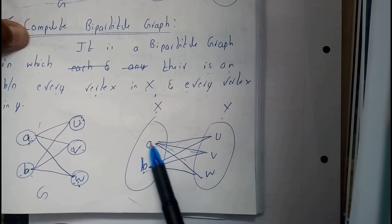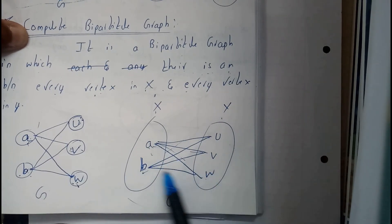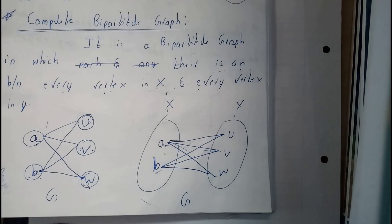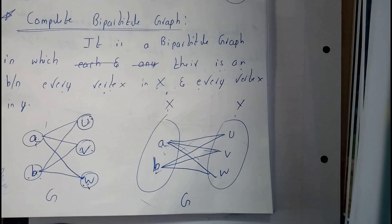a to u, a to v, a to w, b to u, b to v, b to w, like this. So this is a complete bipartite graph. Thanks for watching.